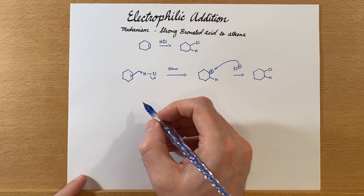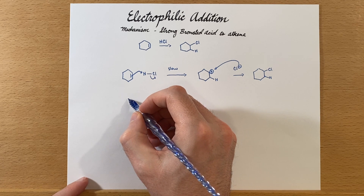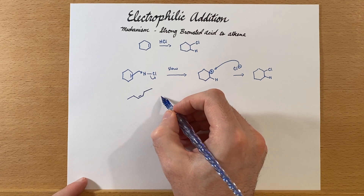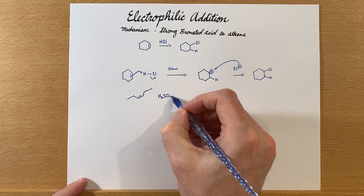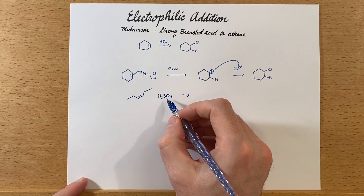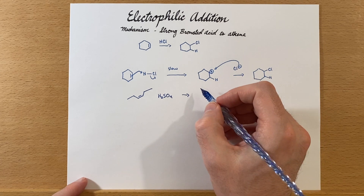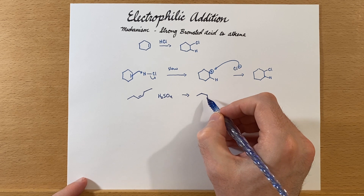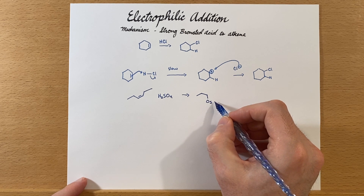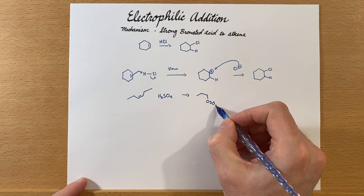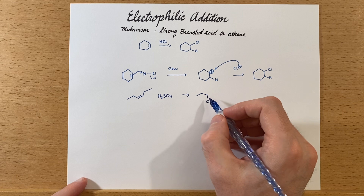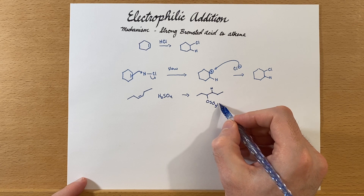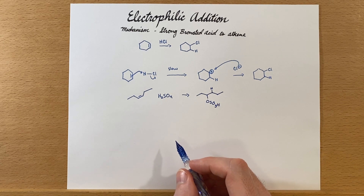Hydrogen chloride is not the only thing that could react — let's look at this using sulfuric acid. Again, this is a symmetrical molecule, so we'll look at what the product would be. We place the substituted portion on one of the carbons that had the double bond, and the hydrogen on the other — we've added that across the double bond.